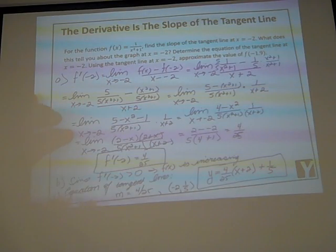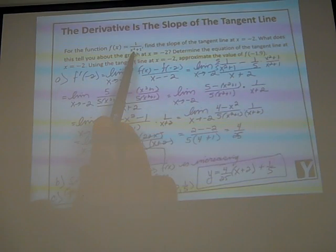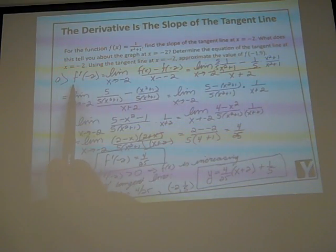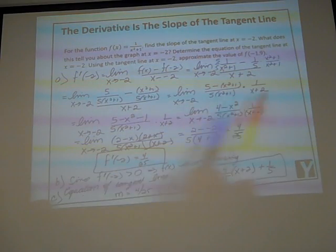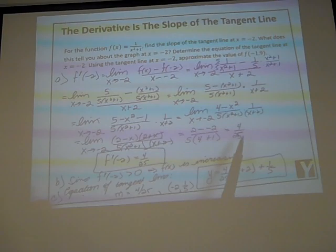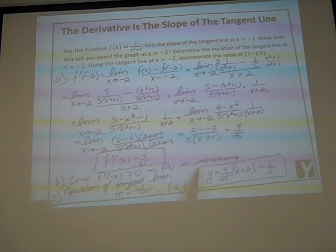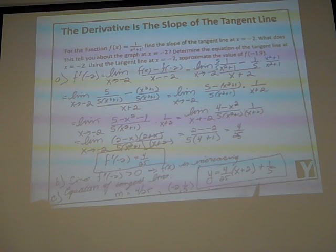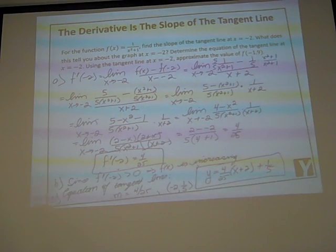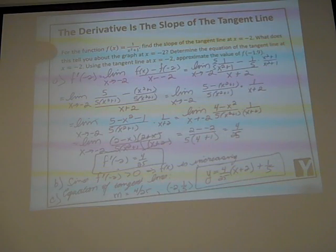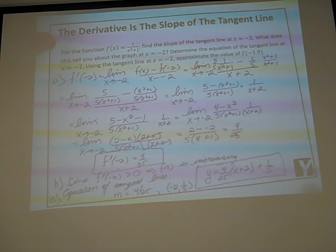That is the equation of the tangent line. To recap: we took f(x) = 1/(x² + 1), found the slope of the tangent line at x = −2 to be 4/25. Because that slope is positive, the function is increasing there. We also wrote the equation of the tangent line using point-slope form. In the next part of this video, we're going to use a different function and find the slope of the tangent line at all points — finding the derivative as a function.